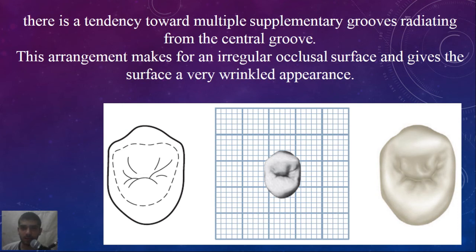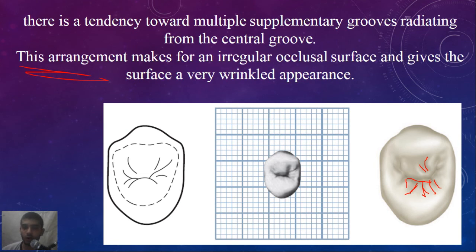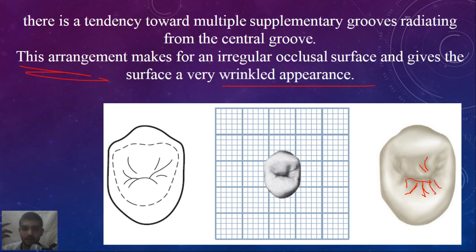In the maxillary second premolar, we can see there are multiple supplementary grooves which radiate from the central developmental groove — these are the radiating ones. This arrangement makes for an irregular occlusal surface and gives the surface a very wrinkled appearance. So, how to distinguish between the maxillary first and second premolar? From an occlusal surface, the occlusal surface of the second premolar is irregular in arrangement because of multiple supplementary grooves radiating from the central groove.